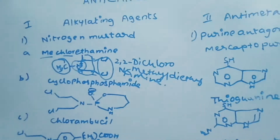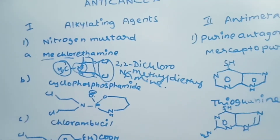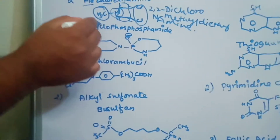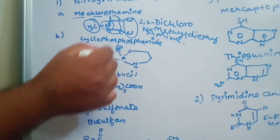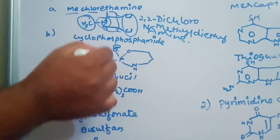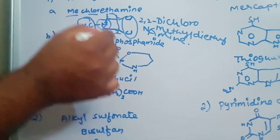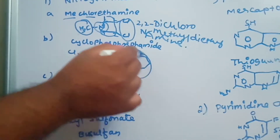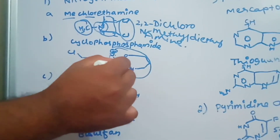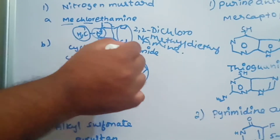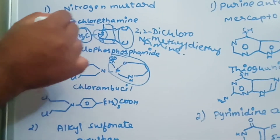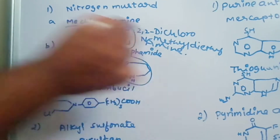The second nitrogen mustard example is cyclophosphamide. It is structurally similar to mechlorethamine, but instead of a methyl group on nitrogen, it has a cyclic ring containing a phosphate and amide group. That is why it is called cyclophosphamide — 'cyclo' means cyclic, 'phosphamide' means phosphate and amine group present in the ring.